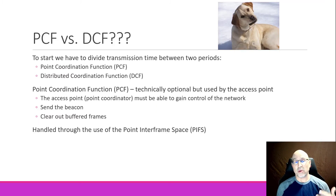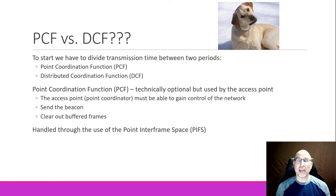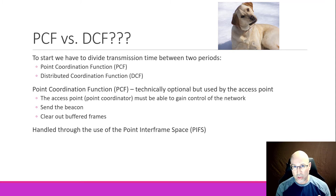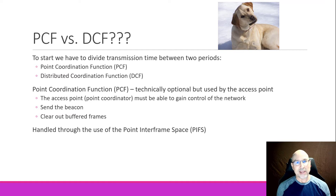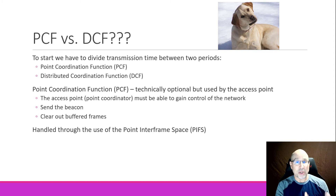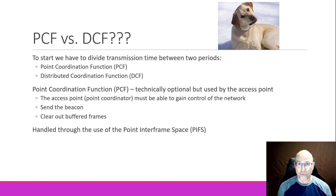Two big abbreviations in the wireless world are PCF and DCF — the Point Coordination Function and the Distributed Coordination Function. Let's start with the Point Coordination Function. Technically, this is an optional part according to the standard because access points are optional, but because we use access points all the time, it's not really optional. The Point Coordination Function is the time period where the access point has control over the media.